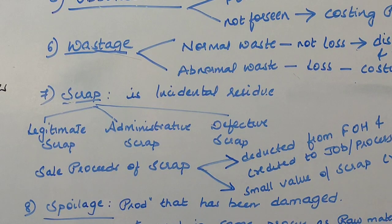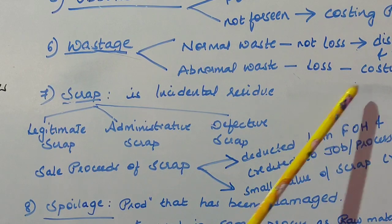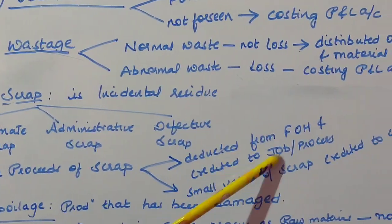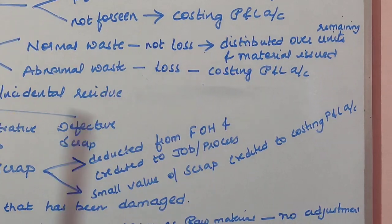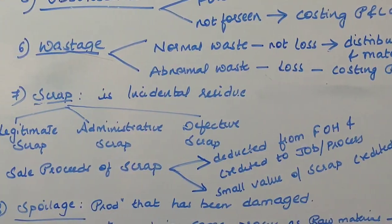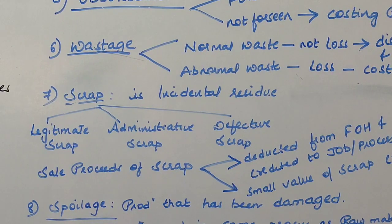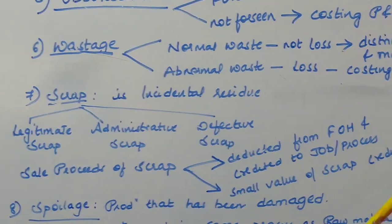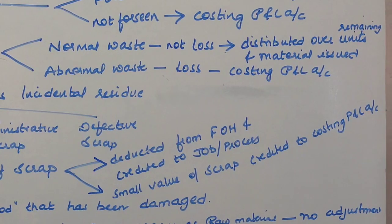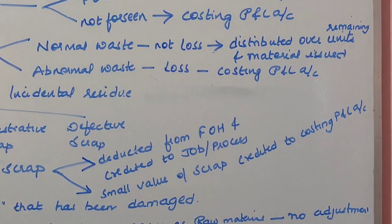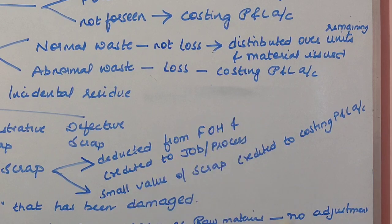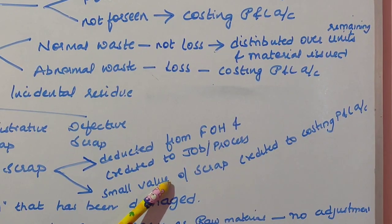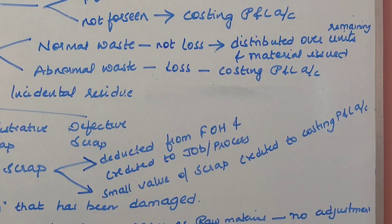Treatment of scrap: The sale proceeds of scrap are generally deducted from factory overhead first, then credited to the job or process from which the scrap resulted. If the scrap value is very small, it is directly posted to the Costing P&L account.